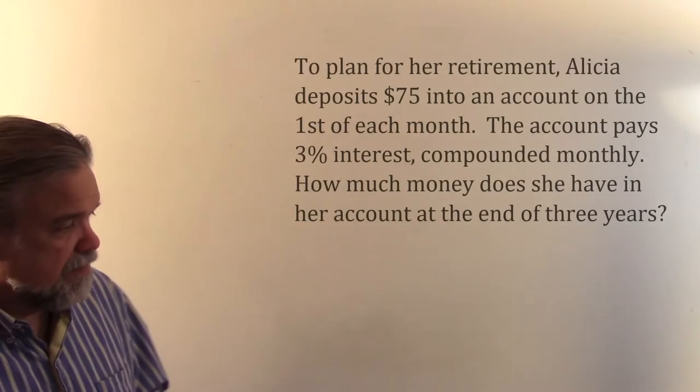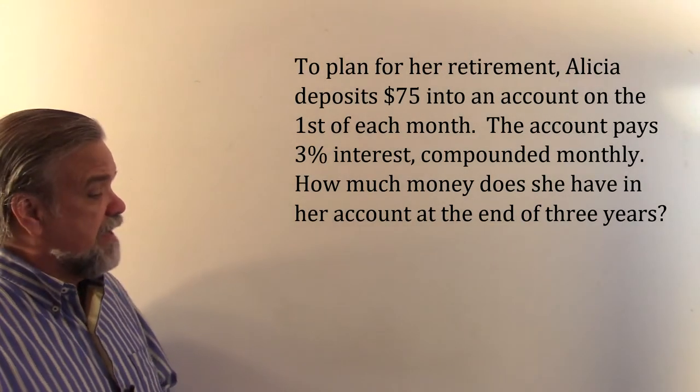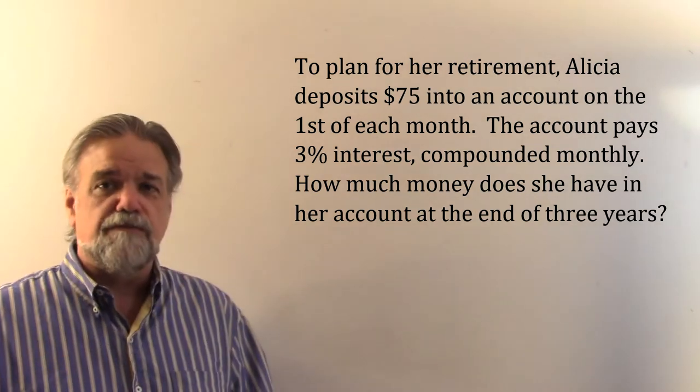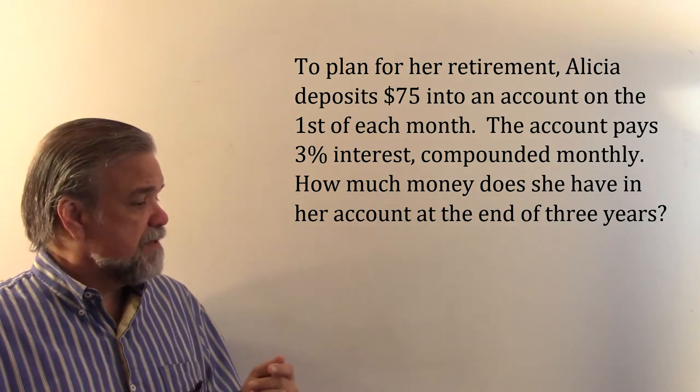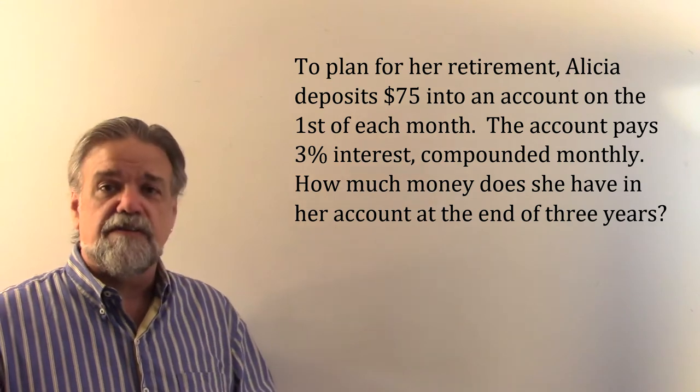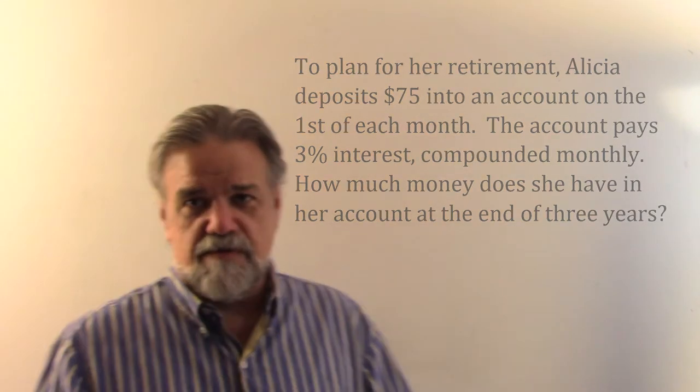Here's the first problem. We have Alicia. To plan for her retirement, Alicia deposits $75 into an account on the first of each month. The account pays 3% interest compounded monthly. How much money does she have in the account at the end of three years? This is what's known as an annuity — just a string of payments. And because the string of payments is paid into an account drawing interest, some of those payments get more interest than others.